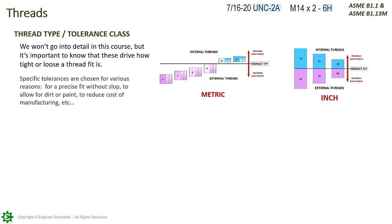Specific tolerances are chosen for various reasons: for a precise fit without slop, to allow for dirt or paint, or to reduce the cost of manufacturing. For more detail, see the standards referenced above.